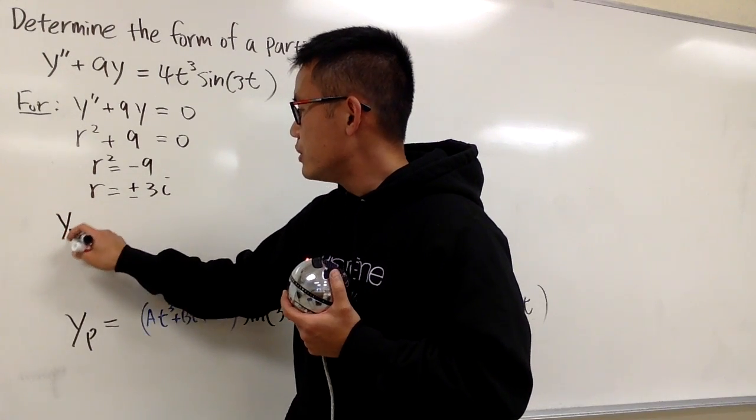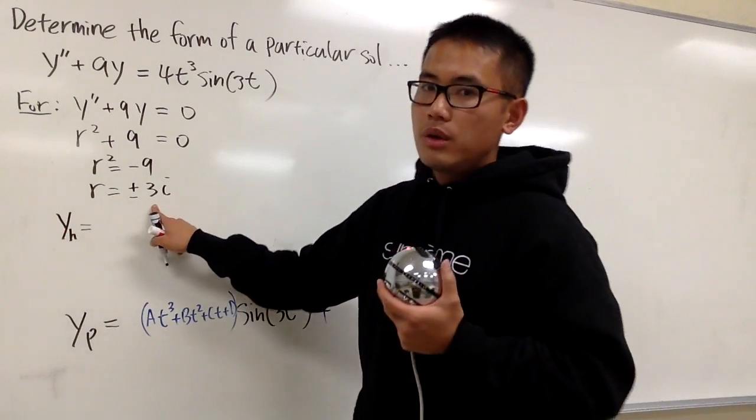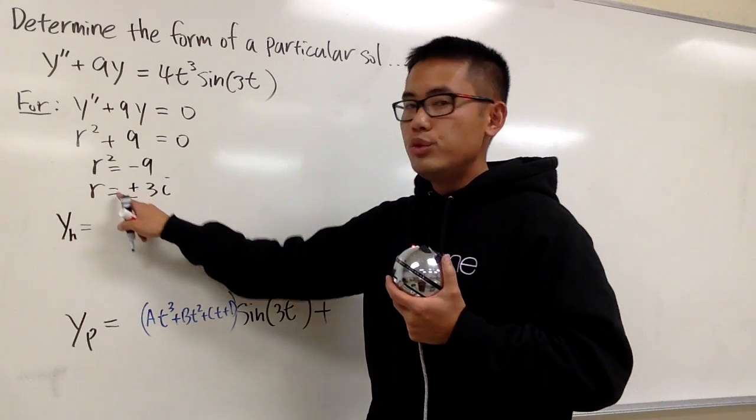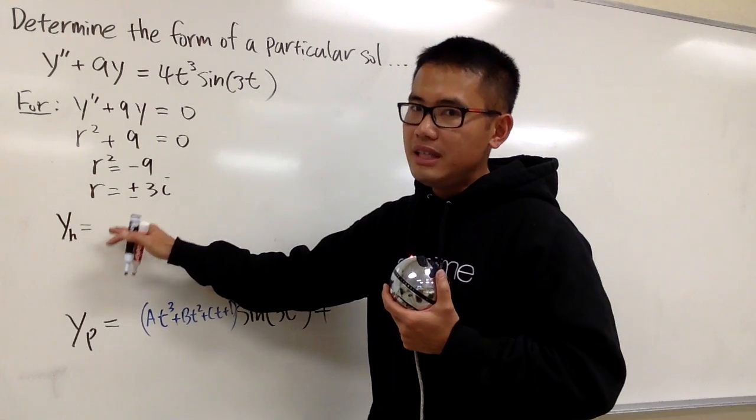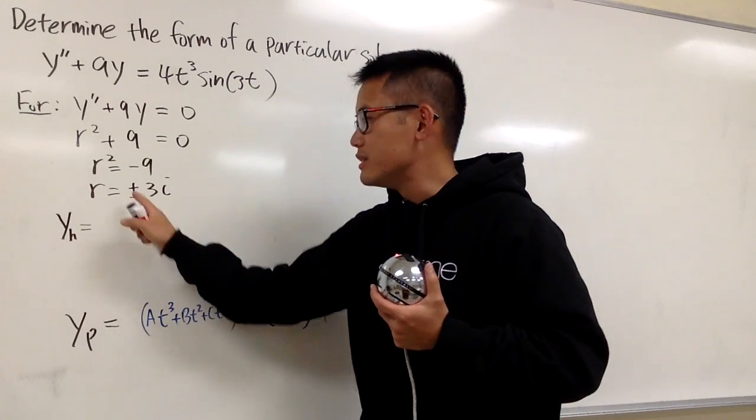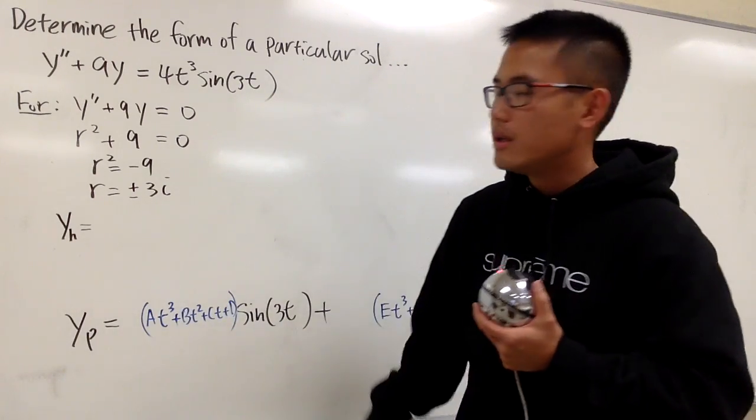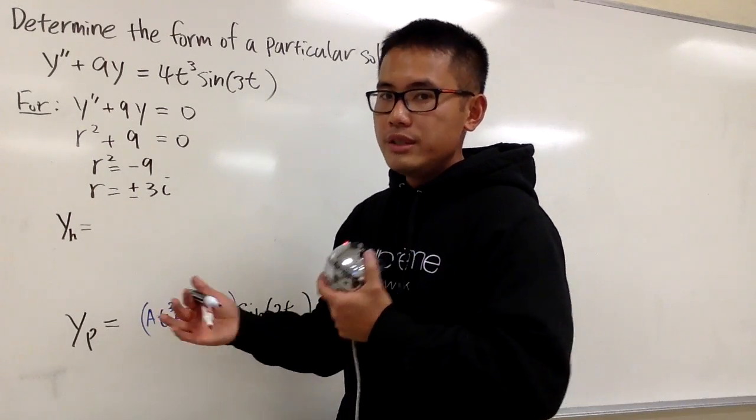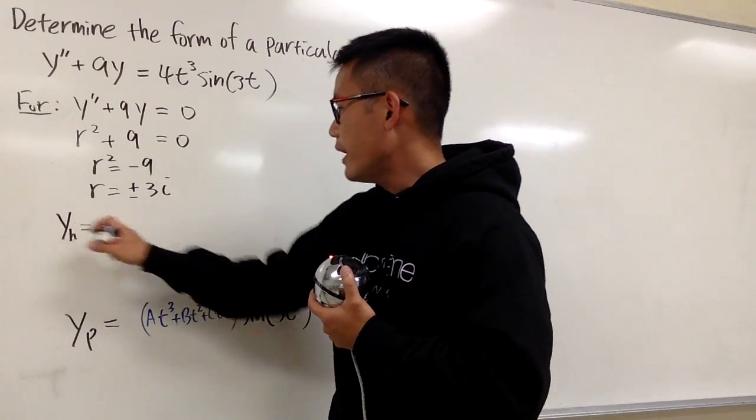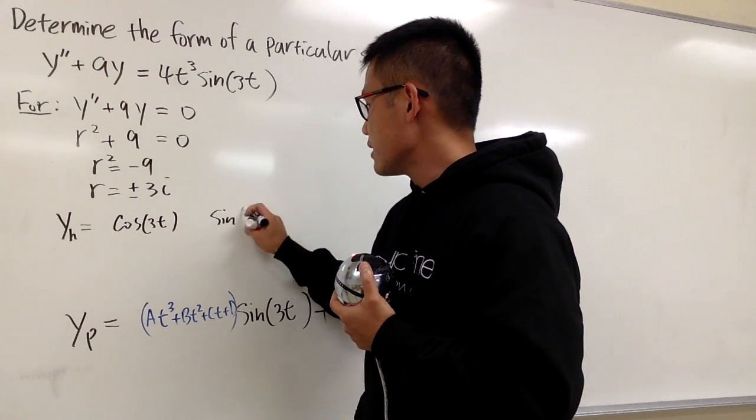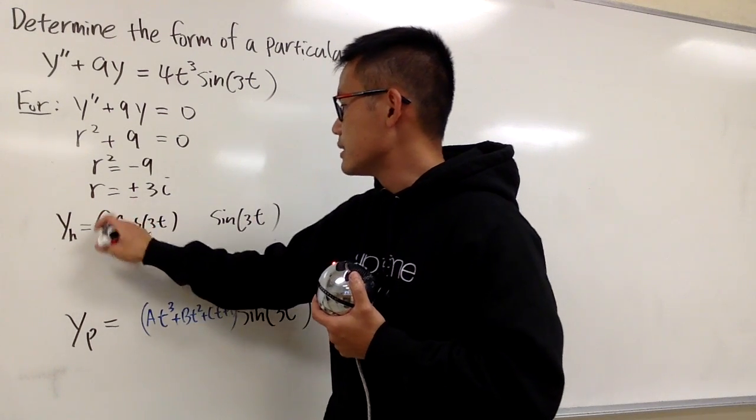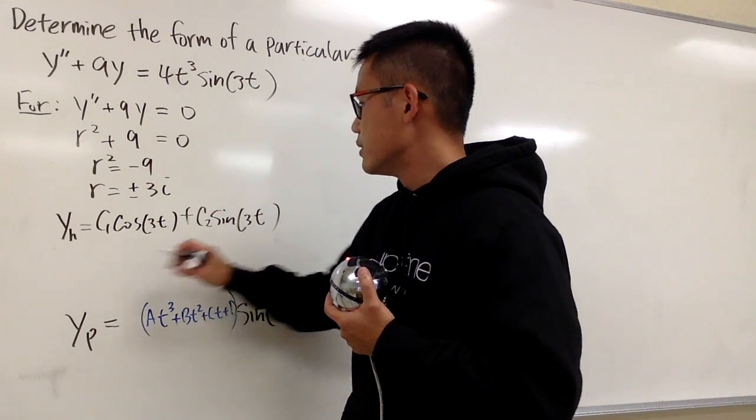And you know, yh is going to be, well, we don't have any real part right here. So it's 0. So that means we don't have any e to the power of the power because e to the 0's power times t is just 1. So right here, we just have cosine 3t and sine 3t. So yh is going to be cosine 3t and then sine 3t. And then we'll put down c1, c2. This is yh.